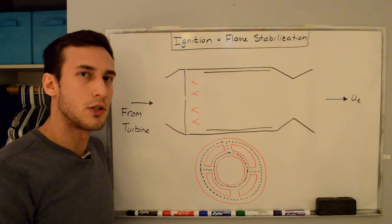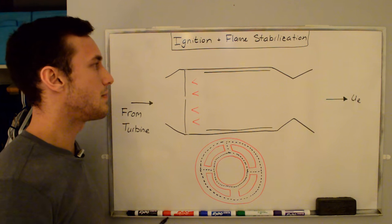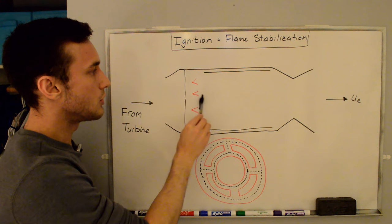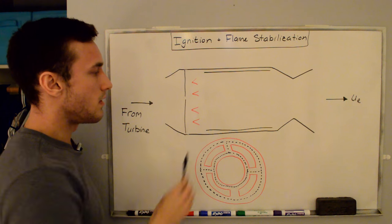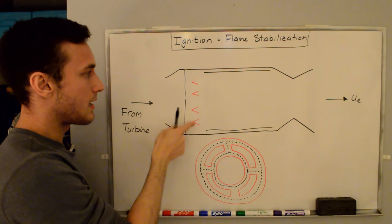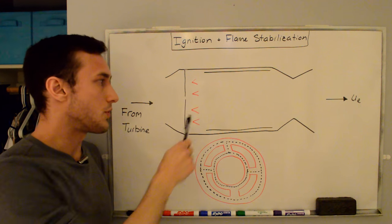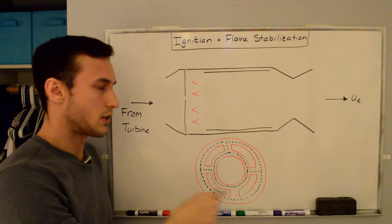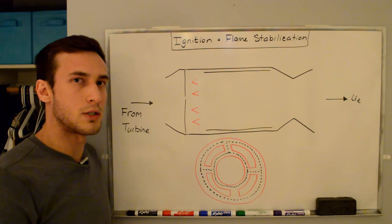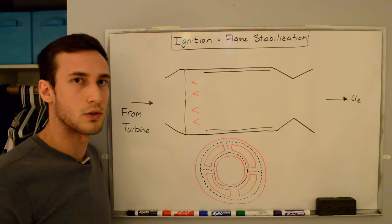So one way to set up a constant ignition source then is to use these bluff bodies, also called flame holders, which set up a recirculation zone behind them, which keeps the gases recirculating and igniting the new fuel-air mixture coming past them. The ignition process just needs to start the stabilized flame, and then you can turn off the ignition source, the spark or whatever they're using, although some engines, I believe, do use a constant ignition source as well.